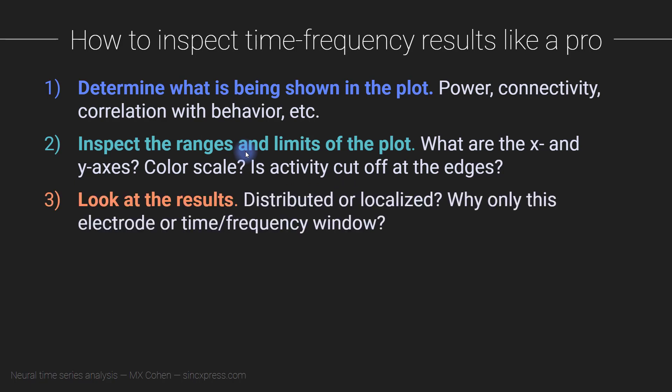Then we get to step three, which is to look at the results that are in the plot. So what kinds of features, what kinds of patterns do you see in the time-frequency plot? Are they distributed over time or frequency? Or are they localized in some narrow frequency or narrow time window?